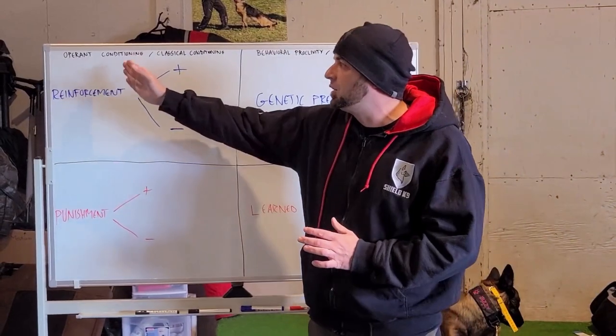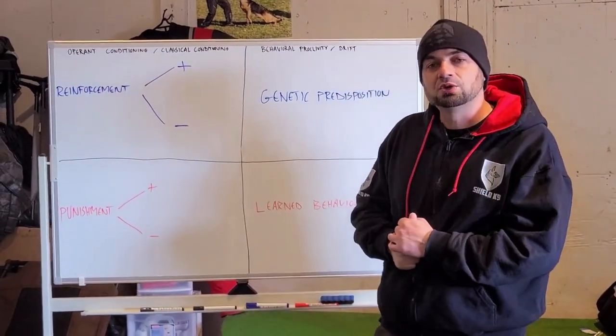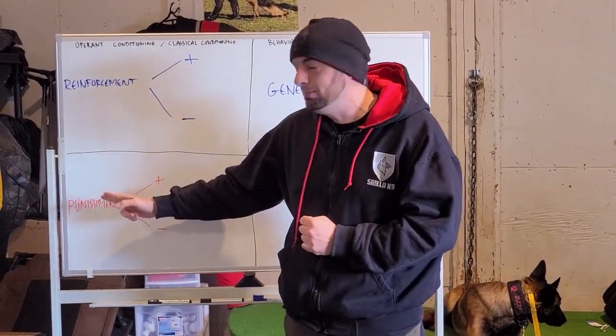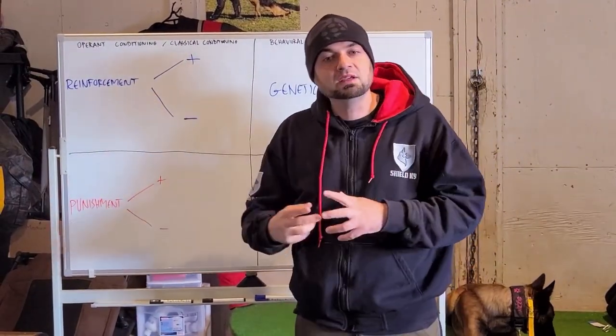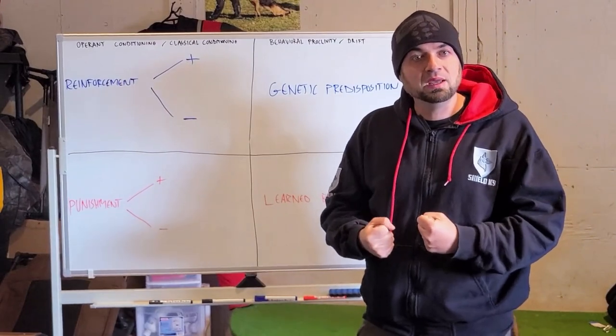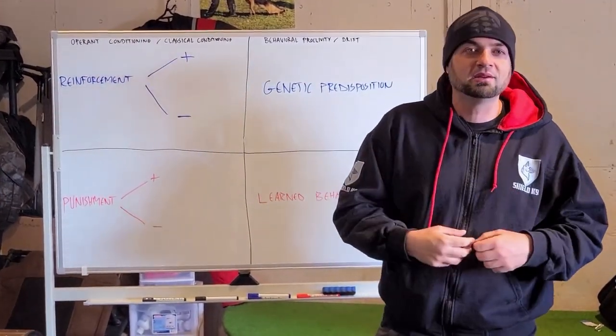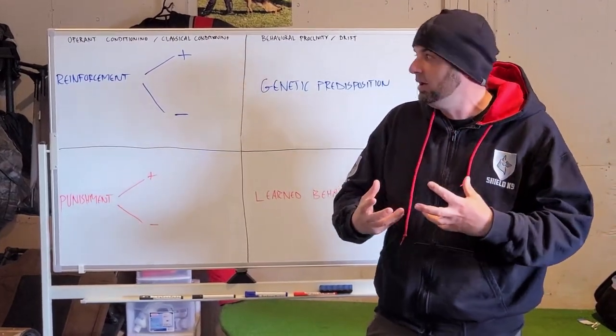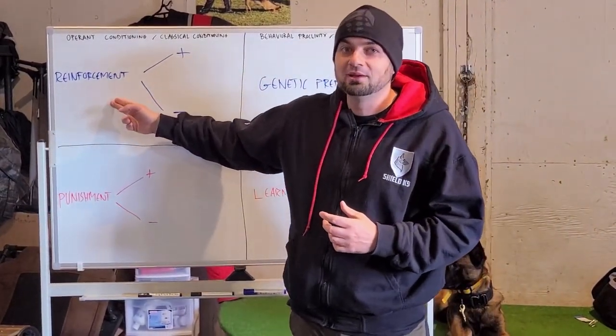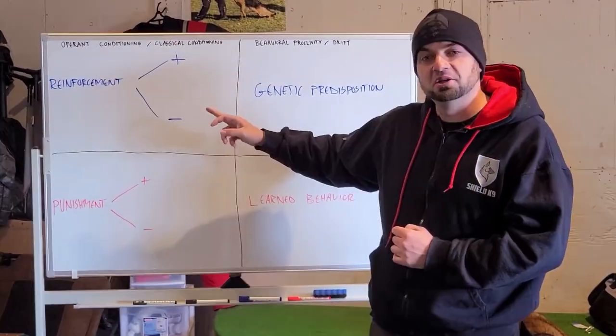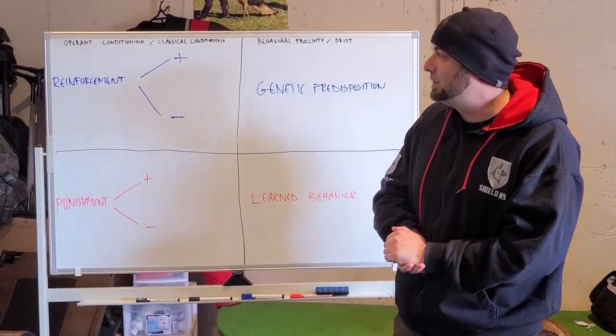I'm going to take a step back and we are going to go into the operant conditioning and classical conditioning side very briefly. Operant conditioning can be separated into reinforcement and punishment. Reinforcement is anything that you do that creates behavior or strengthens behavior. Whether you want to teach the dog something new or whether you want to make something the dog already knows better, you're on the reinforcement side. If I'm giving positive reinforcement, I'm giving something desirable to the dog.